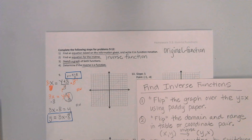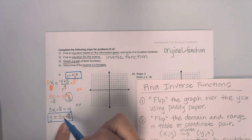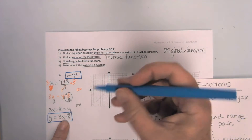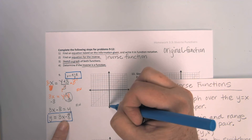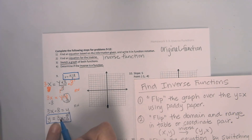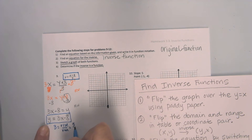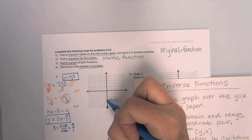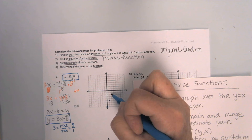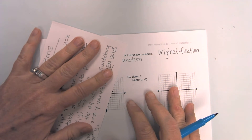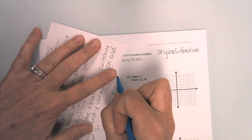Now I need to sketch both functions. I know how to sketch this easily. I'm going to take that negative eight — this is my y-intercept — so I'll put a point at zero, negative eight. My slope is 3 over 1, which means rise three, run one. I'll rise three and run one repeatedly to get enough points, then sketch in my line.